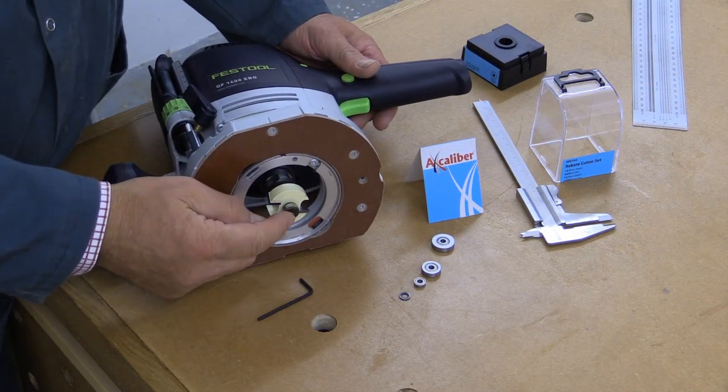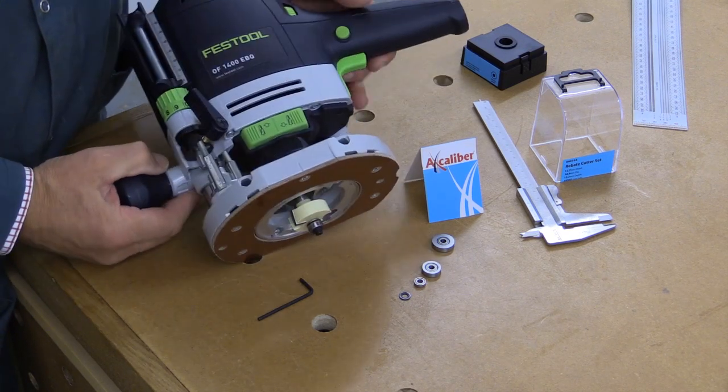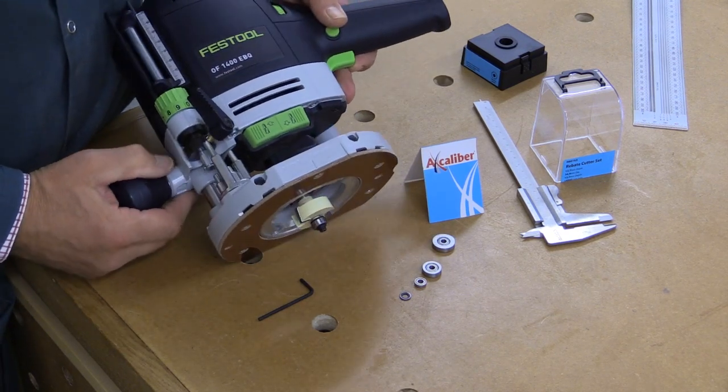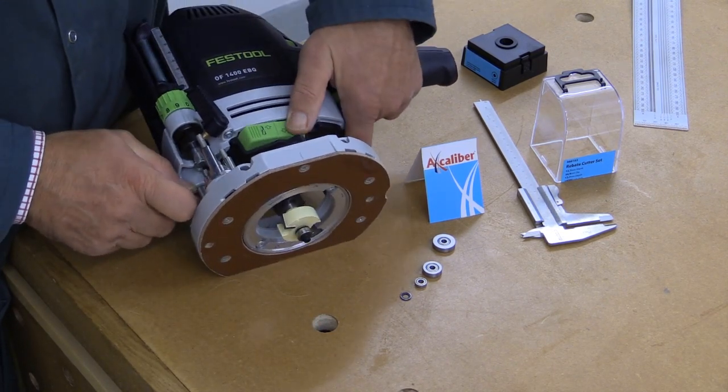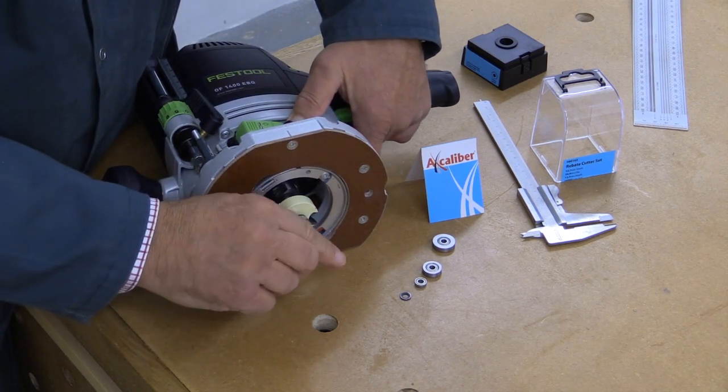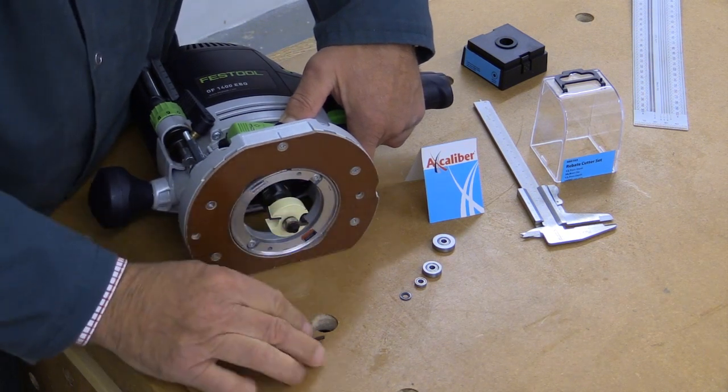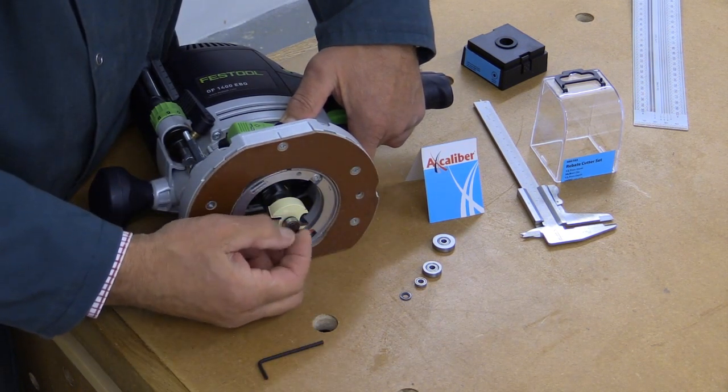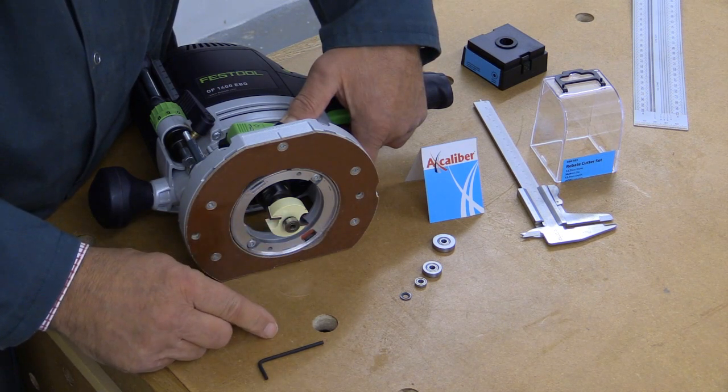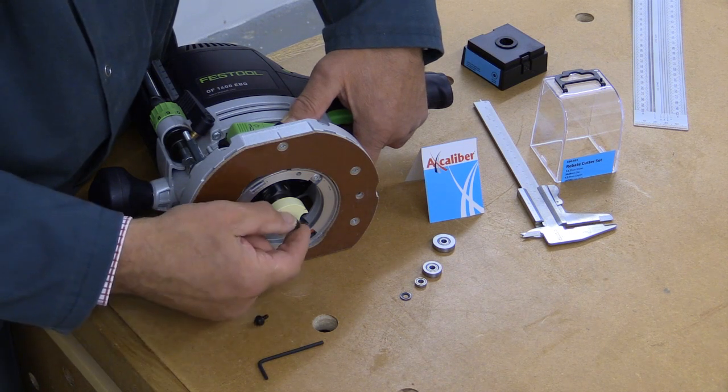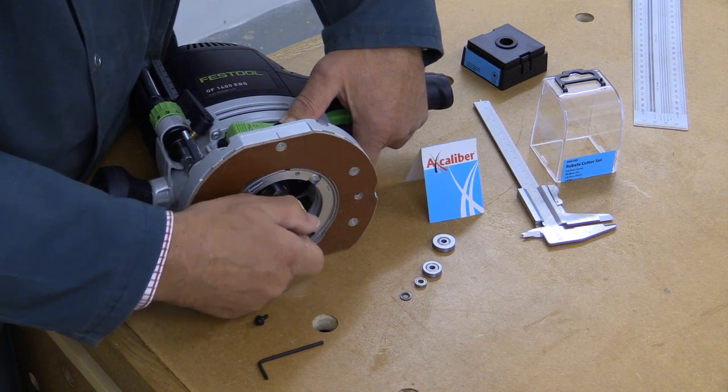And probably the easiest way to undo this little bolt on the end in order to change the bearing is to mount the cutter in your router and if you have a router like this one from Festool then you can lock the shaft so that the cutter will not turn and that allows you then to very easily undo that little bolt at the end. Now whenever you do something like this for the first time take extra special care to make sure you see what order the various bits and pieces go in and particularly where the washers go.